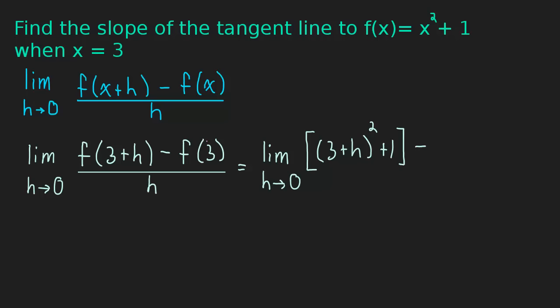So that's this first part here. Then we have to subtract the next part, so minus. And we're going to do the same thing. We're just going to plug 3 in for every x. So 3 squared plus 1. So that's this part here. And this is all still divided by h.